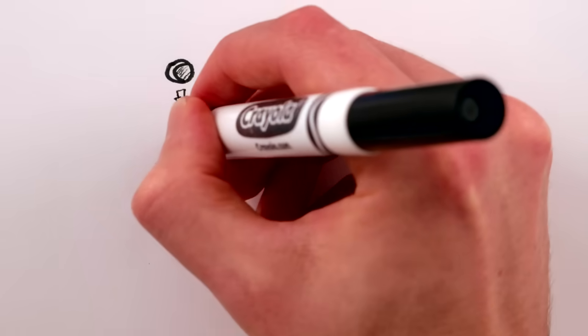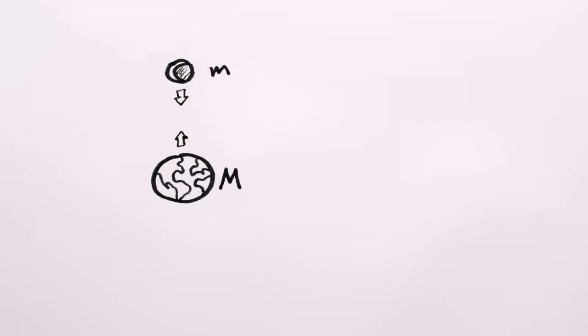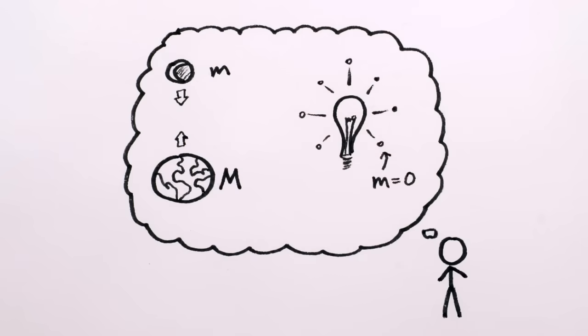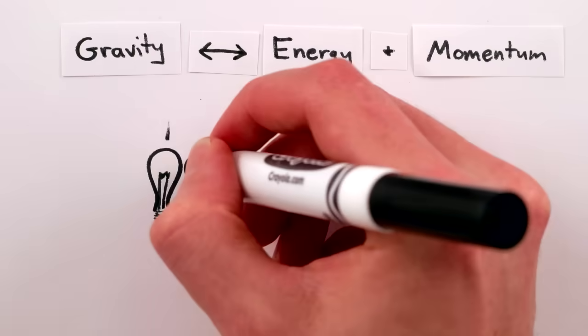You probably learned that objects attract each other based on their mass, so you probably grew up thinking that light can't possibly be affected by gravity because light is massless. I know I did. Well guess what, the source of gravity is not mass, it's energy and momentum, which light certainly has.